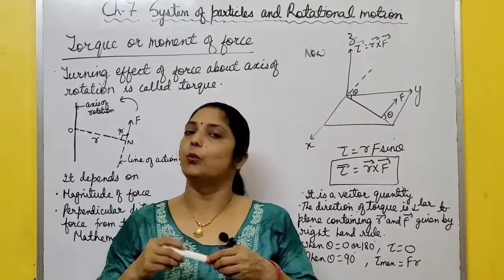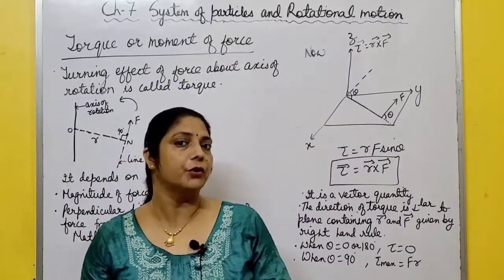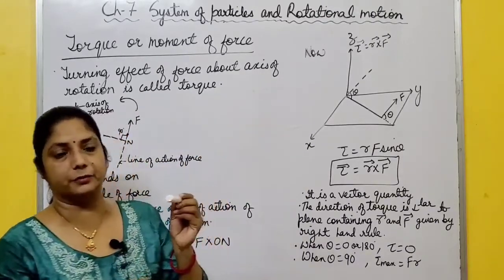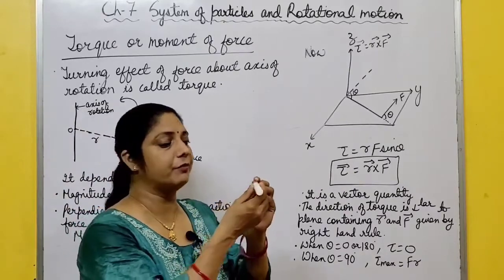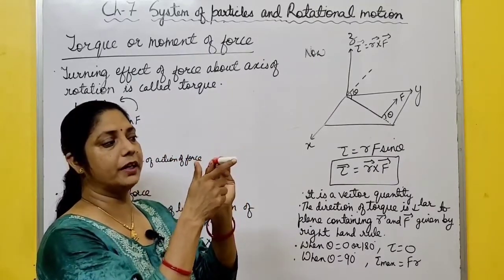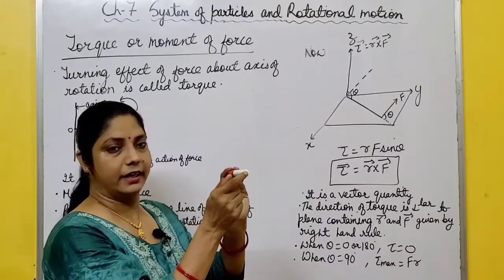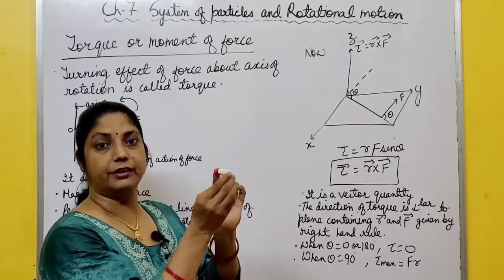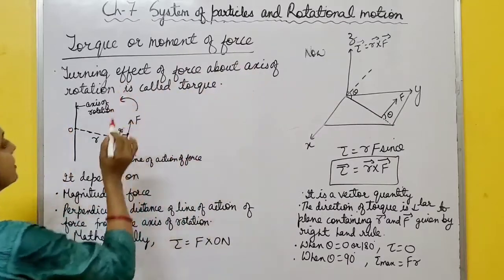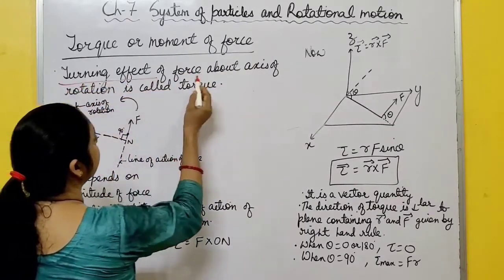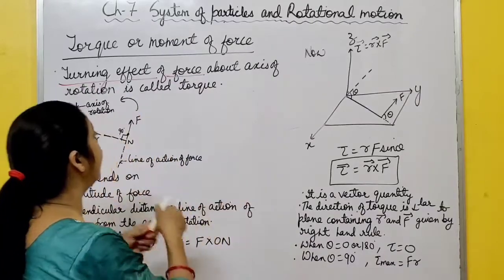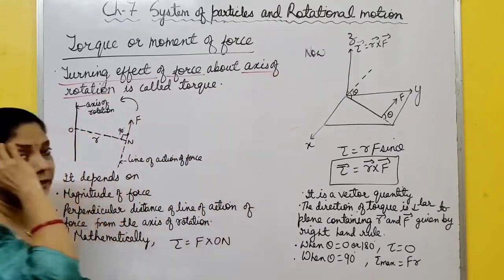Torque, or moment of force, is the rotational analogy of force. To produce any linear or translatory motion you apply some force. But if you want to rotate a body, you fix one point and apply force at another point - then the body starts rotating about that fixed axis. Greater the force, greater is the rotation and greater is the turning effect. This turning effect of force about the axis of rotation is called torque.